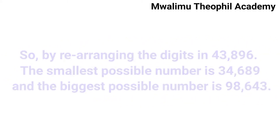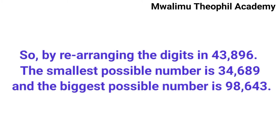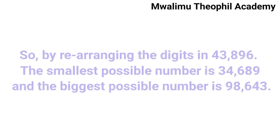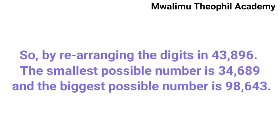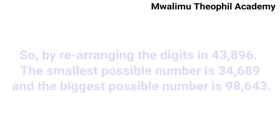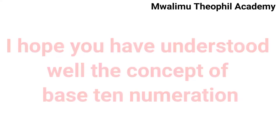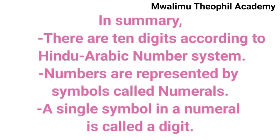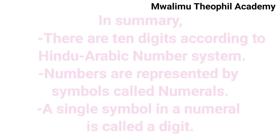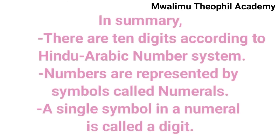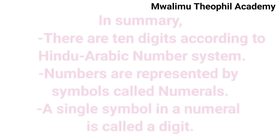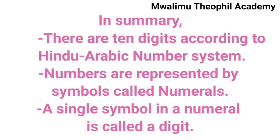We now have these two different numbers: in the first number, we rearranged the digits starting from the smallest digit to the largest digit, while in the second number, we started from the largest digit to the smallest digit. From these two examples, I hope you have understood the concept of base 10 numeration, where you have seen the 10 digits according to the Hindu-Arabic number system, and that numbers are represented by symbols known as numerals, with a single symbol within a numeral known as a digit.